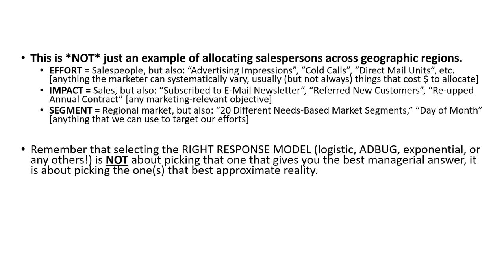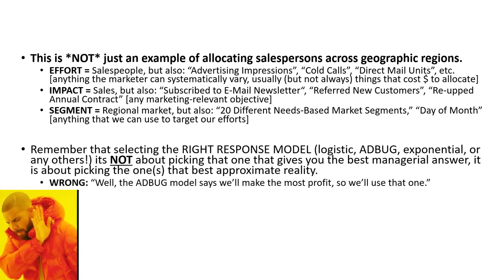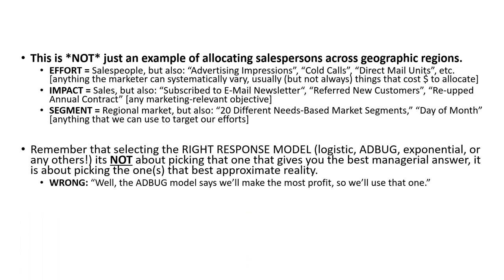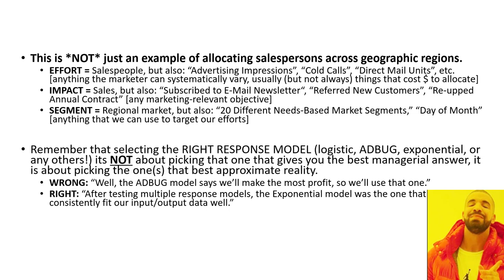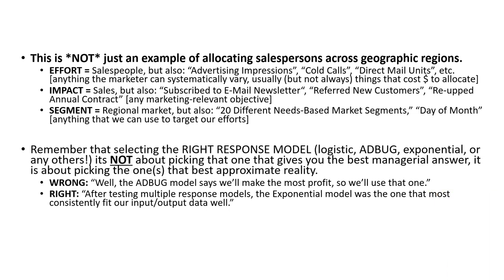Another thing that students often lose sight of is selecting the right response model — logistic, adbug, exponential, or others like power series or linear. Remember, it's not about picking the response model that gives you the best managerial answer. It's about picking the one that best approximates reality. An example of poor justification: the adbug model says we'll make the most profit, so we'll use that one — that's wrong-headed thinking. An example of right-headed thinking: after testing multiple different response models, the exponential model was the one that most consistently fit our input-output data well. That's using a rationale where the math form most closely fits the data, and data is the representation of reality.